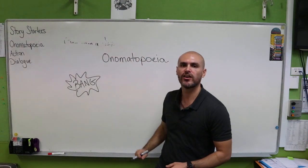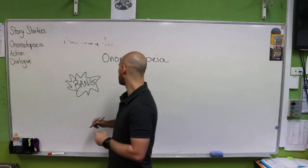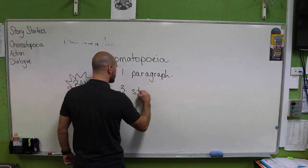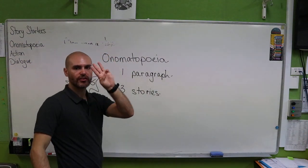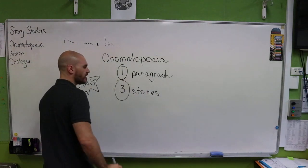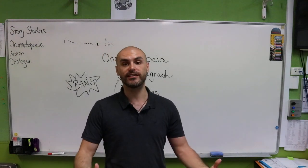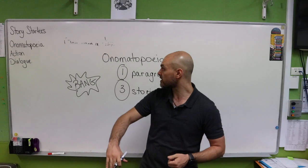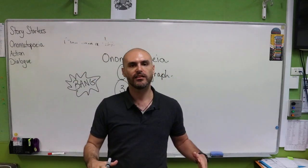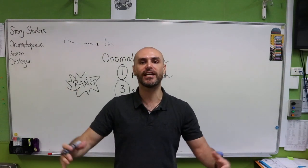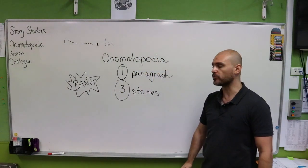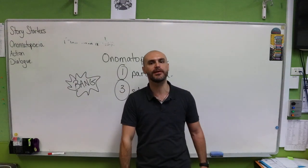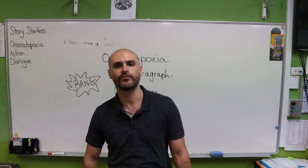So using your five story starters, I want to see the first paragraph of three different stories — one paragraph, three stories, meaning you've written three paragraphs altogether. They're not all connected; they're all separate. This is a way for you to practice using your story starters, to get your ideas out there, and to see which ones work and which ones don't. In your workbooks, write one paragraph on one of your story starters, then a second paragraph on another onomatopoeia story starter, then a third paragraph on the third one — three different stories. Try and make them as different as you can; the more different they are, the better it is for you.